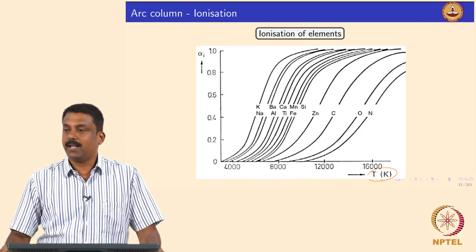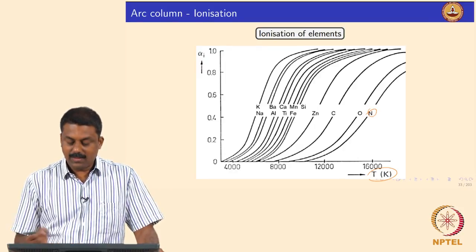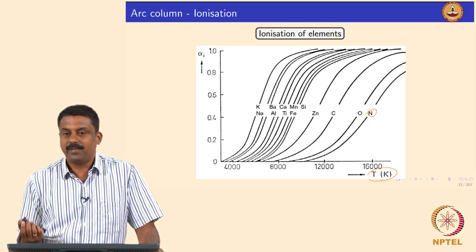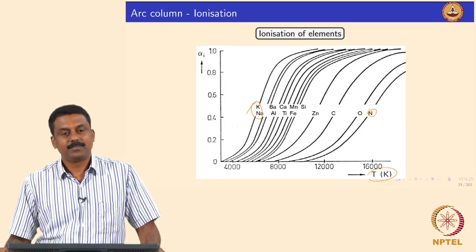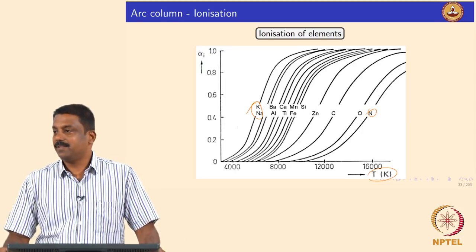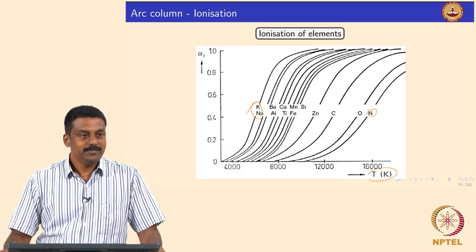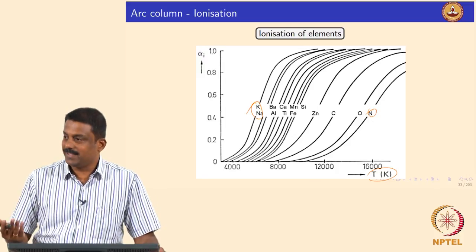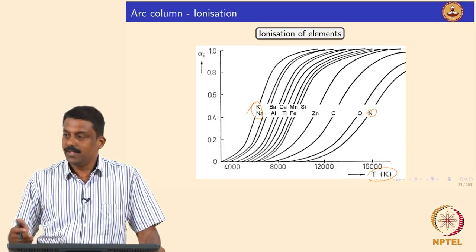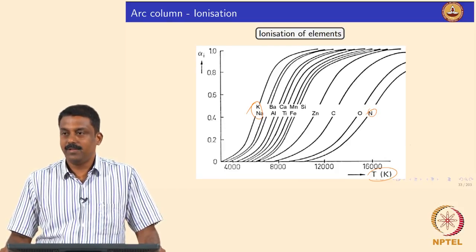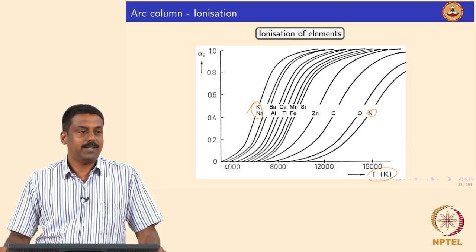If you put the temperature on this curve, nitrogen has the very highest ionization potential, whereas sodium and potassium have very low ionization potential. That is why you can always create sodium ions and potassium ions much more easily, whereas if you want to create N+, the temperature has to go much higher because of the very high ionization energy needed to ionize nitrogen or oxygen.